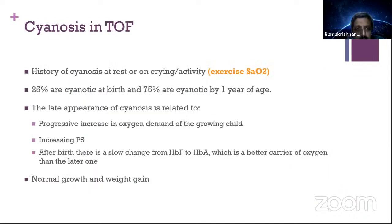Common features of cyanosis in tetralogy: the history of cyanosis will vary with activity. If a patient is acyanotic — a pink tetralogy — always remember to check exercise saturation. That is very important. Any cyanotic congenital heart disease where saturation is borderline, always perform exercise saturation, especially if the patient is hemodynamically stable. Twenty-five percent are cyanotic at birth and 75% are cyanotic by the first year of life.